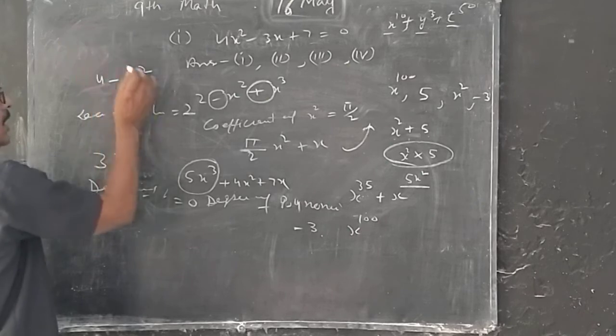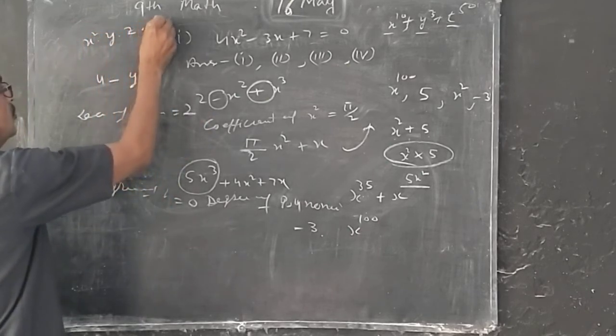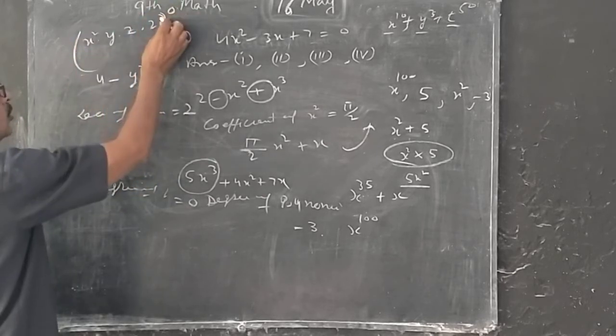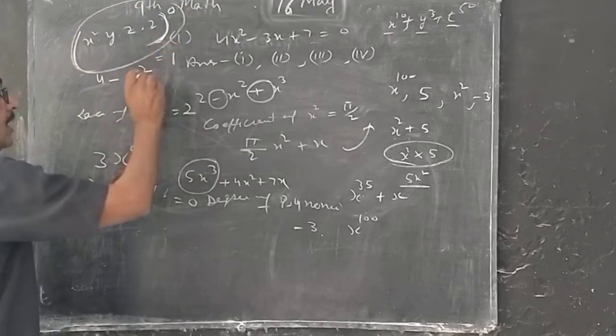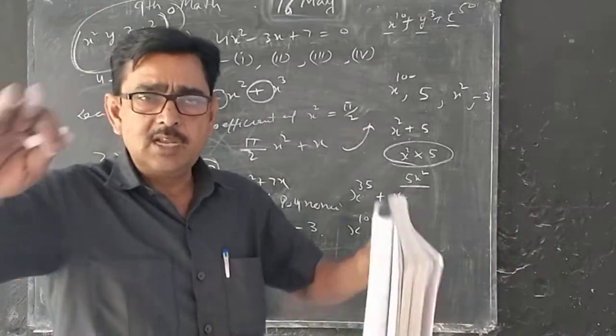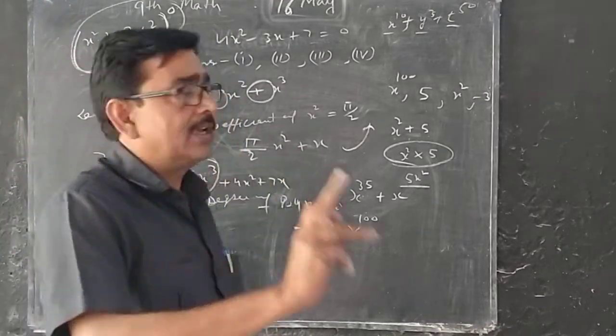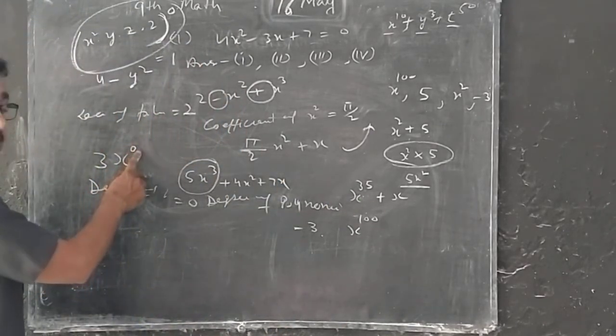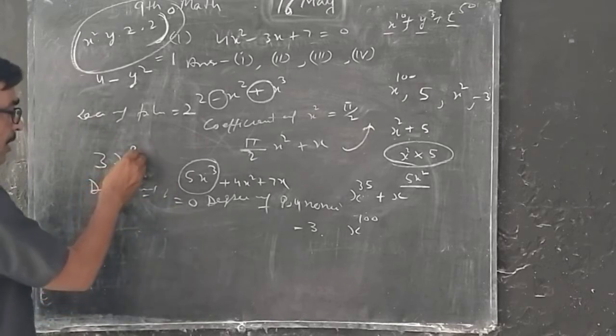3x to power 0. Now the term is equal to 3. So the degree of polynomial is equal to 2. For x square into y into 2, this is equal to power 0 to the number. The power is equal to 0.